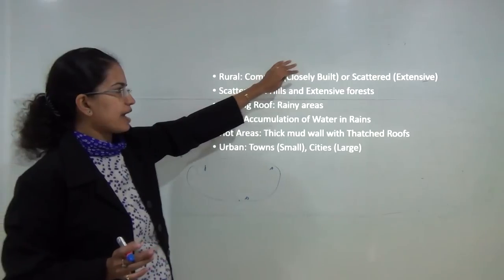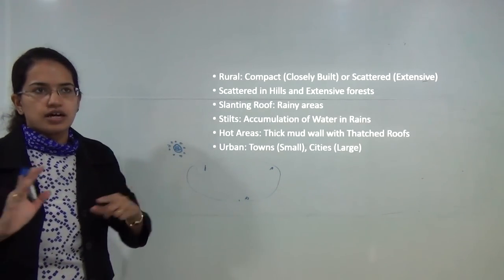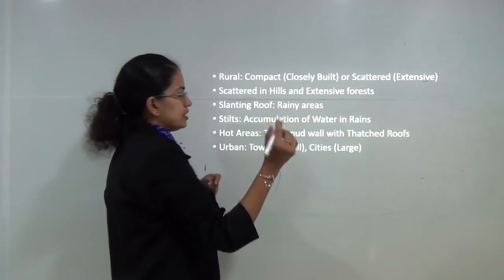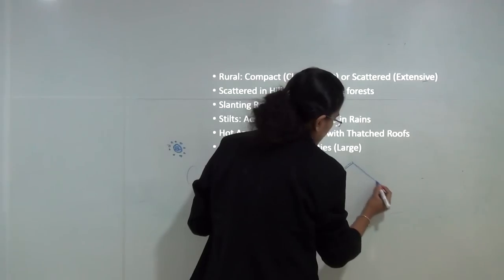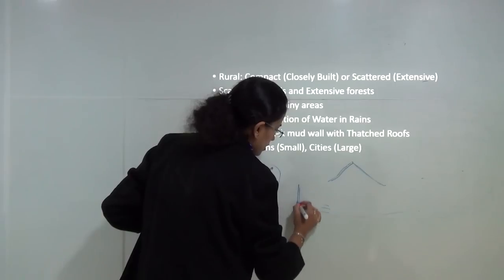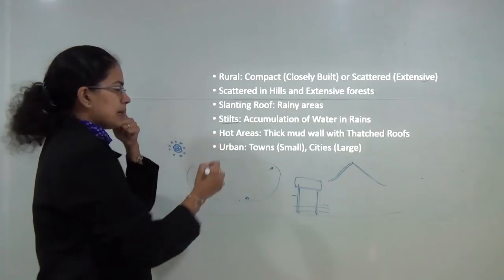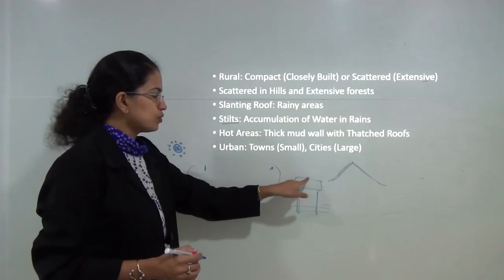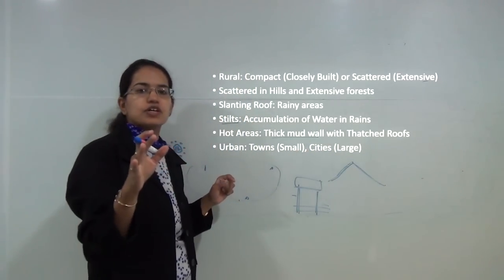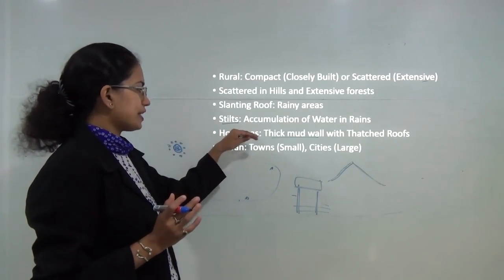Scattered settlements are usually found in hilly, desert, or forest areas. Based on climatic conditions, various roof types are seen. In areas with heavy rainfall, slanting roofs are common. In areas with water accumulation at the base, houses are built on poles and are known as stilt houses, which prevent accumulated water from entering. In very hot areas, thick mud walls and thatched roofs reduce sunlight and heat entering the house.